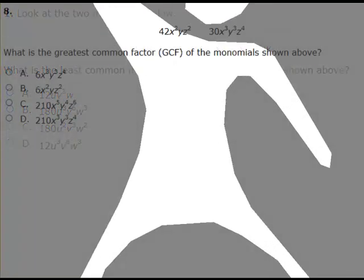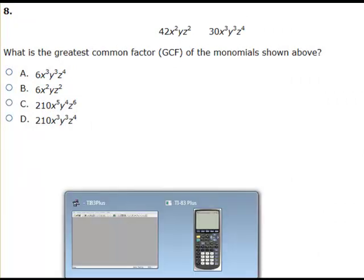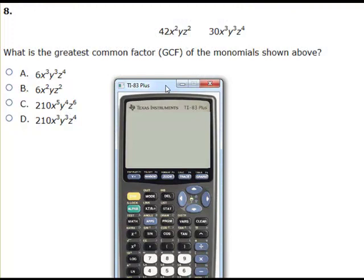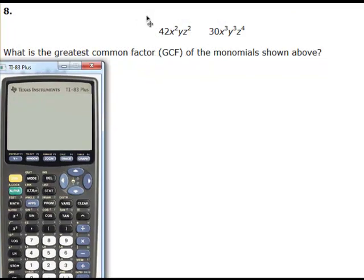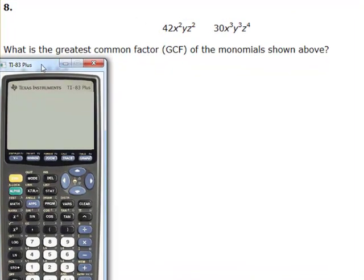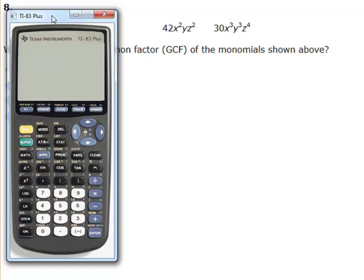My next example is the greatest common factor, GCF. You should be able to do this without a calculator — you're looking for the largest number that divides evenly into 42 and 30. But let's say on the Keystones they have really huge outrageous numbers and you want to find the greatest common factor.